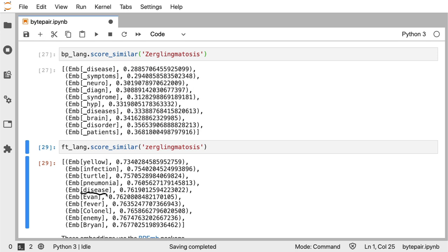And indeed we get more appropriate behavior but it's still not perfect. Yes disease is in here now, but things like Brian and Colonel do indicate that it's really focusing on other parts of the word as well, which the byte pair embedding seems to be able to escape.